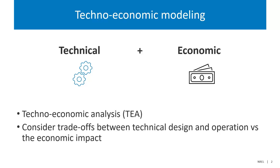I'm talking specifically today about techno-economic modeling, and that involves two components if you're not familiar with it: the technical model and the economic model. This is really important because it allows us to think about trade-offs between impacts to technical design, how that impacts operation and performance of the system, and then looking at the economic impact.